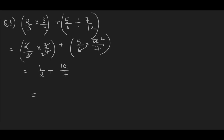Now find the LCM of 7 and 2, which is 14. That gives 7 plus 20 over 14, so 27/14. This is an improper fraction, so convert it to a mixed fraction: 1 and 13/14.